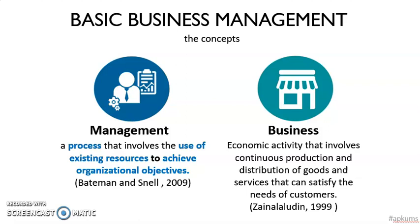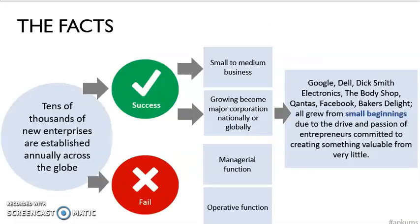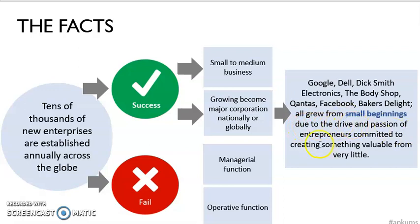Before we continue with management functions, we look at what are the effects of a small business. In the world, there are tens of thousands of new companies being established every year. Some of these companies succeed — they start from a small to medium business and grow to become a very big organization, corporation nationally or globally, such as Dell, Google, and other companies. These companies can grow from small to big due to the drive and patience of the entrepreneur.